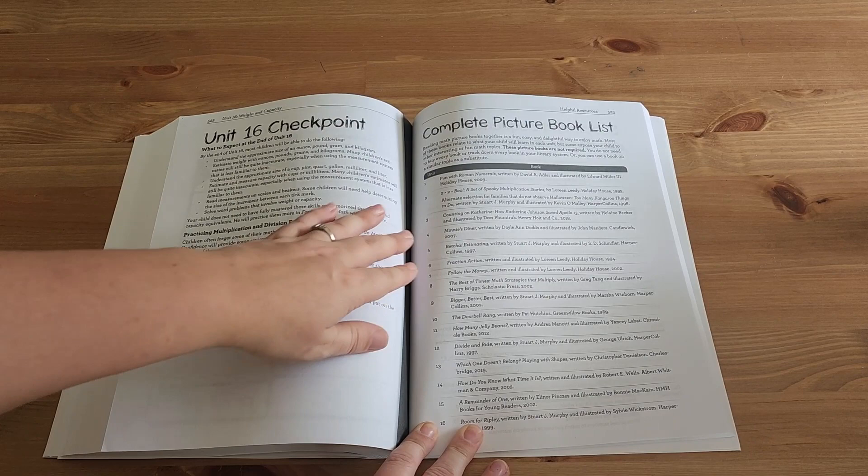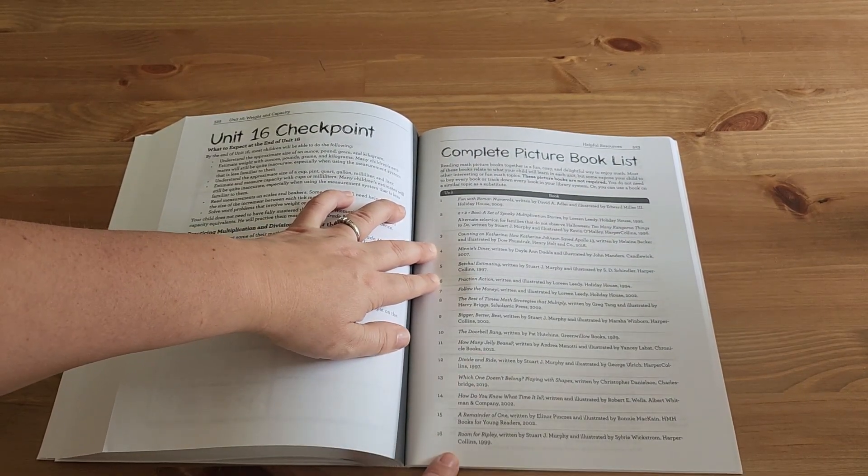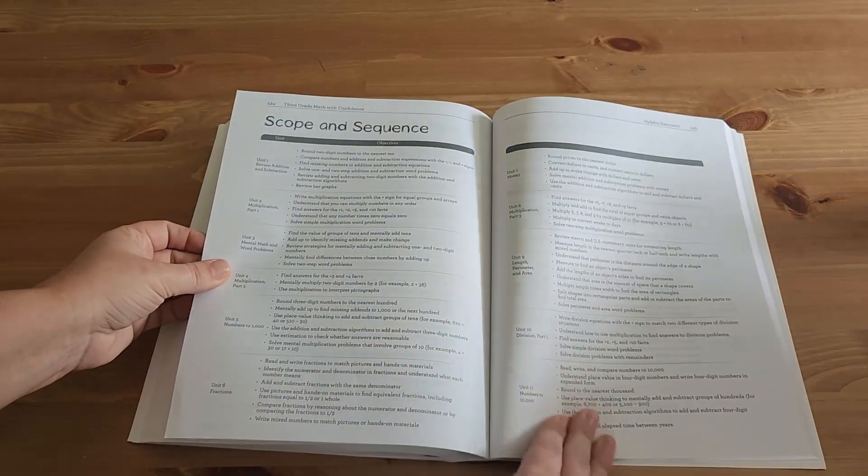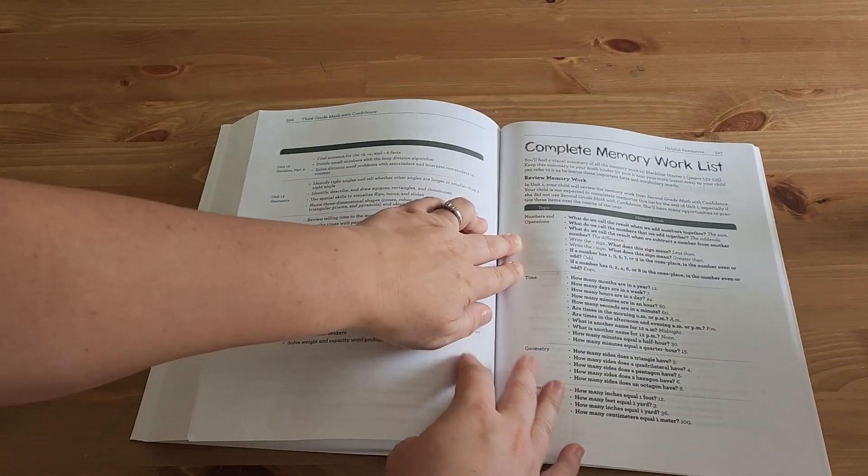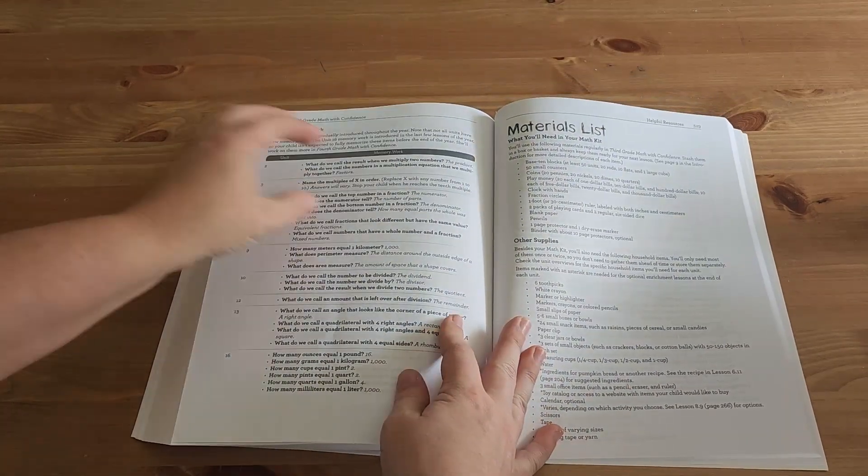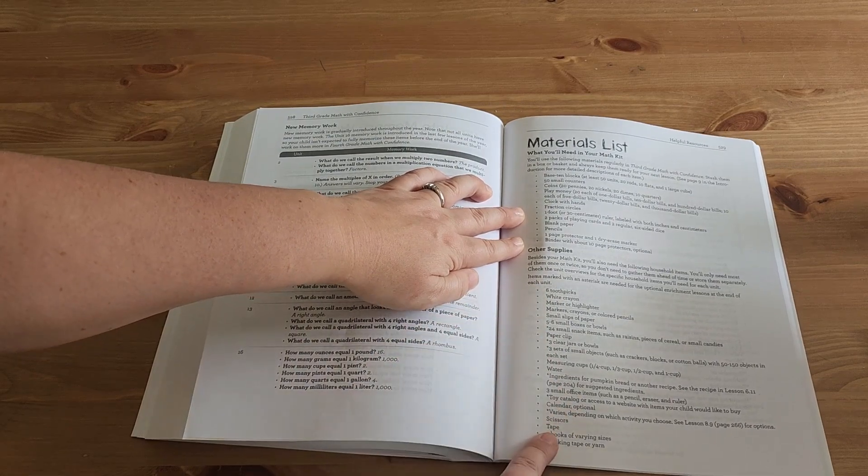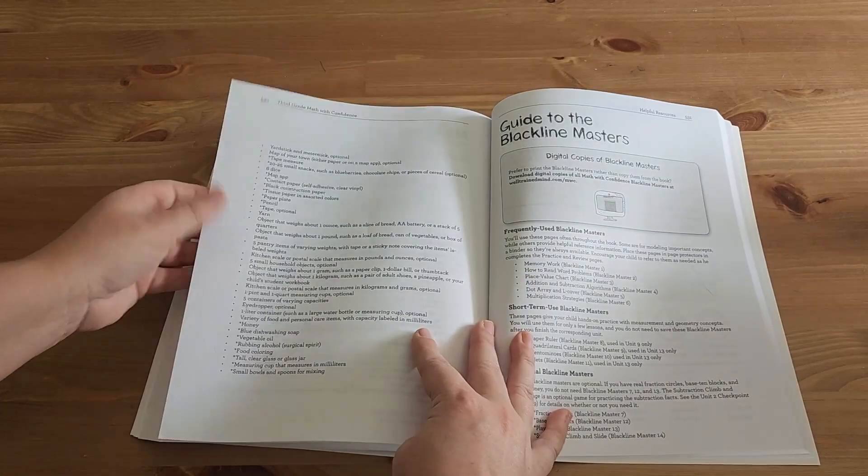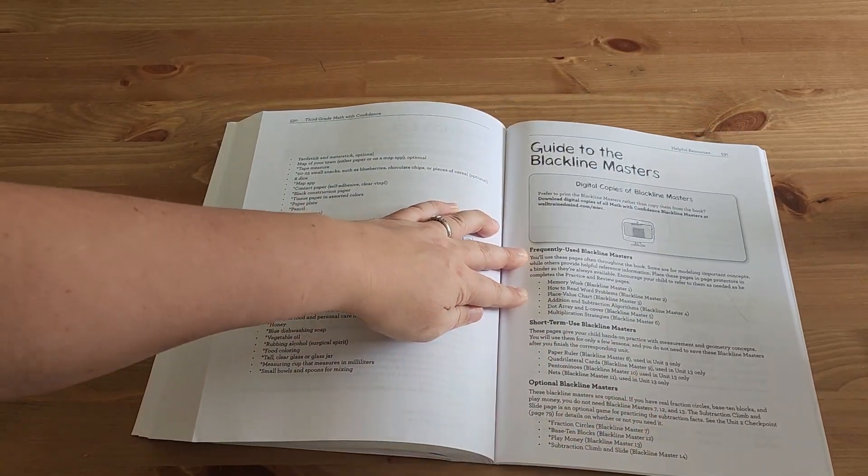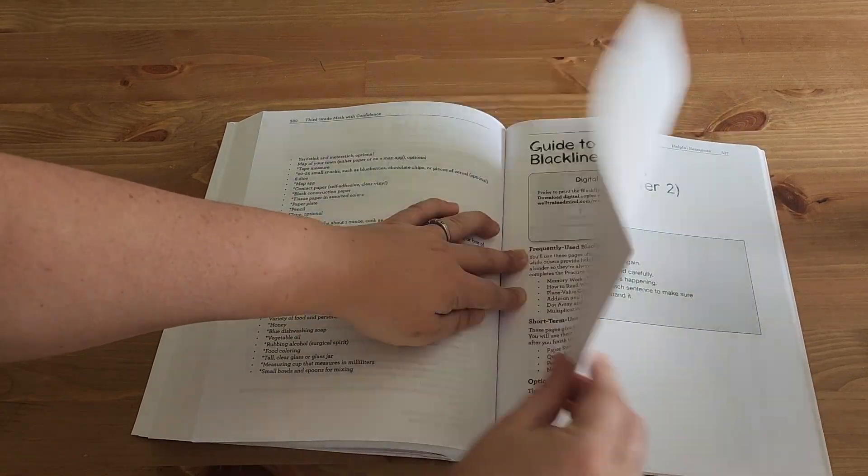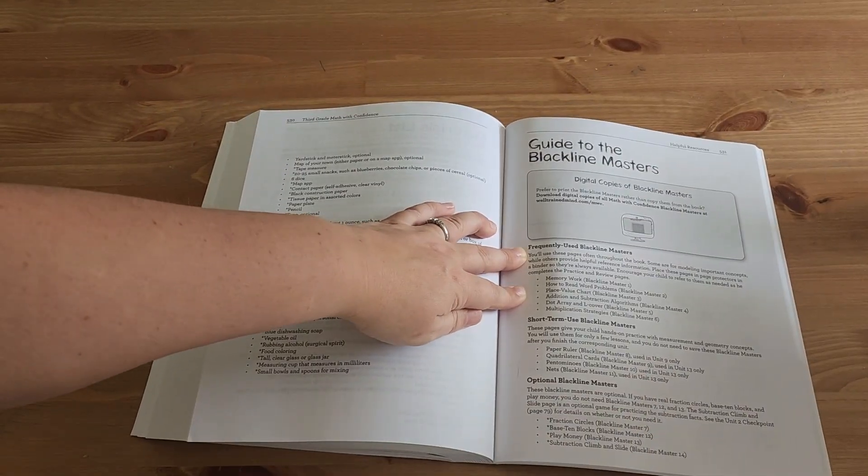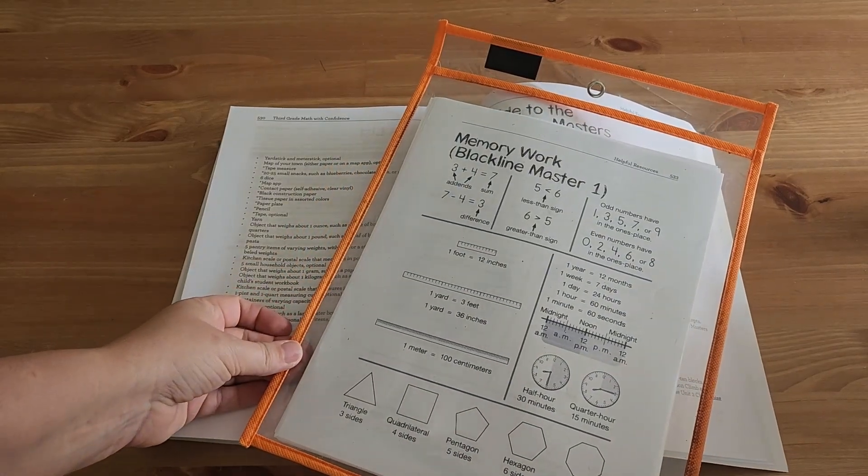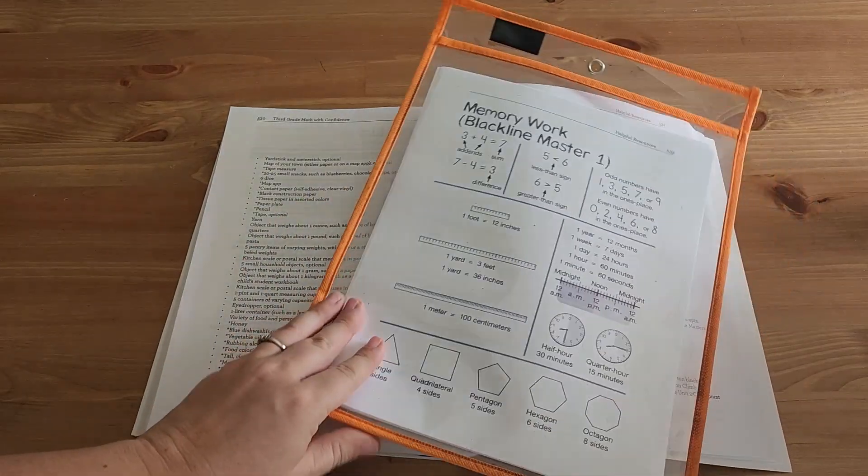So now I have skipped to the end of the book where there are all kinds of helpful resources, including a complete picture book list. So it tells you all the different picture books that are recommended for the enrichment lessons, has the scope and sequence of each unit, has the complete memory work list, a materials list and some other supplies that will be needed at some point. Again, they're pretty basic materials that you probably already have. And then there are black line masters. And so in the next pages are all of the black line masters that you can use. Now, I went on and printed them off, which you can do here on the Well-trained Mind website, and I put them into this little plastic sleeve.